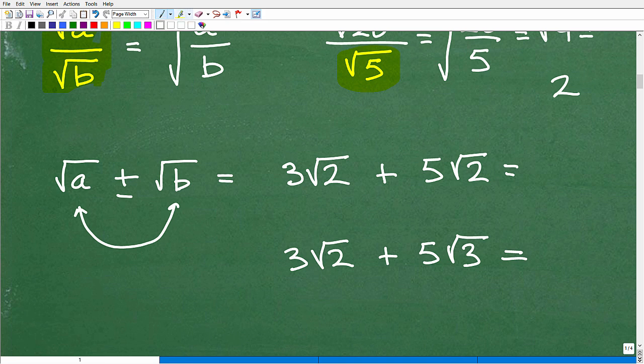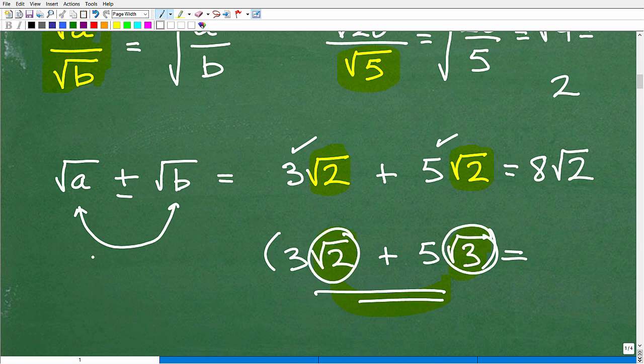You can add or subtract square root terms, expressions, if these square roots are exactly the same. They have to be exactly the same. In other words, this is the square root of 2, this is the square root of 2. So I just add these numbers here, 3 and 5. So this is 8 square root of 2. This one here, 3 square root of 2 plus 5 square root of 3, I cannot do this problem. This is fully simplified. I'm done right here because these two are different. This is very much like in algebra when you're combining like terms, like 2x, I can combine with 5x because these are exactly the same. Same thing here.